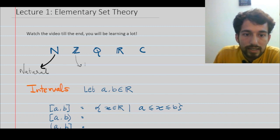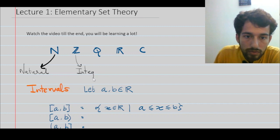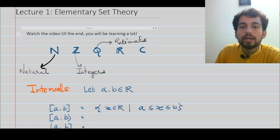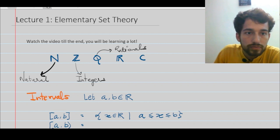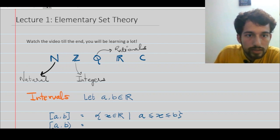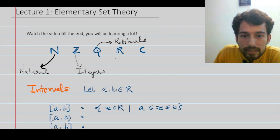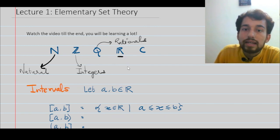The second set is the set of integers. The third is the set of rationals — all fractions of the form p/q where p and q are integers and q is non-zero. These two sets — the rationals and the reals — are very important in the context of real analysis.